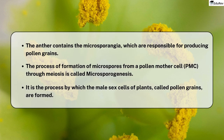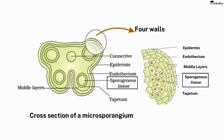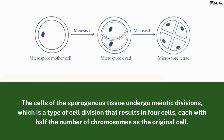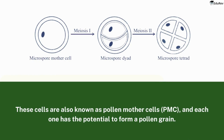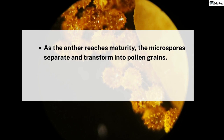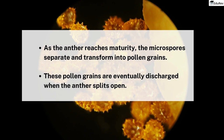Microsporogenesis is the process by which the male sex cells of plants, called pollen grains, are formed. It all starts with cells called sporogenous tissue located in the anthers of flowers. The cells of the sporogenous tissue undergo meiotic divisions — a type of cell division that results in four cells, each with half the number of chromosomes as the original cell. These four cells are arranged in a group called a microspore tetrad. These cells are also known as pollen mother cells (PMC), and each one has the potential to form a pollen grain. As the anther reaches maturity, the microspores separate and transform into pollen grains, which are eventually discharged when the anther splits open.